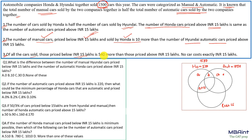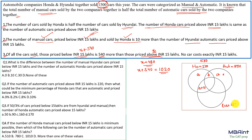Third condition: cars priced below 15 lakhs is 540 more than those priced above 15 lakhs. Let cars above 15 lakhs = x, then below = x + 540. So x + 540 + x = 1500, giving 2x = 960, x = 480. Therefore cars below 15 lakhs = 1020.